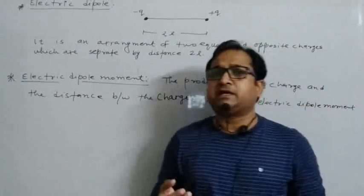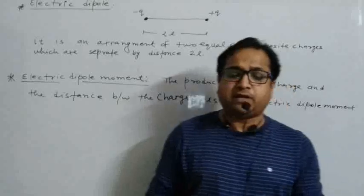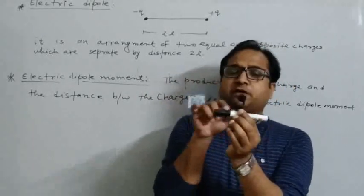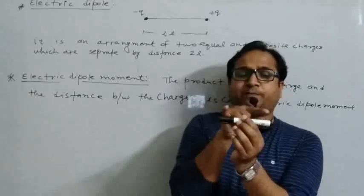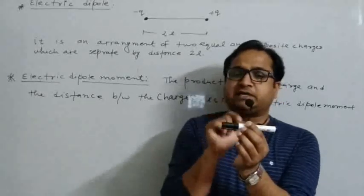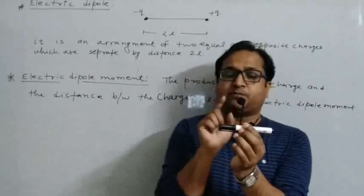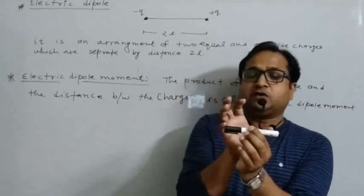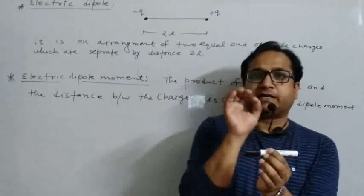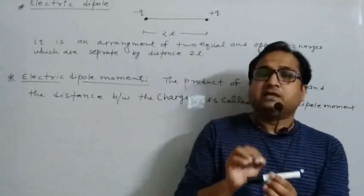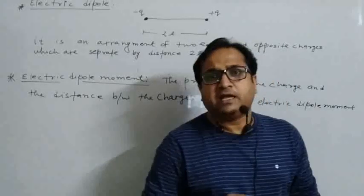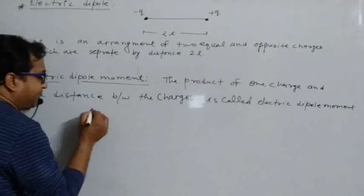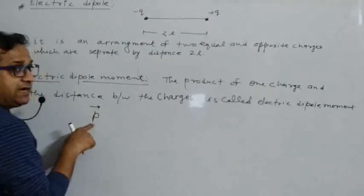What is the electric dipole moment? The electric dipole moment is the product of the charge and the distance between the two charges. It is called the electric dipole moment. This is a vector quantity, and it is represented by vector p.